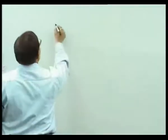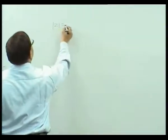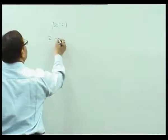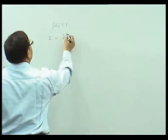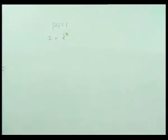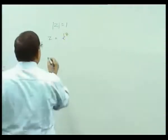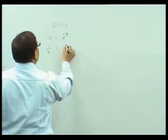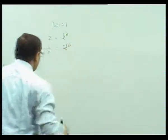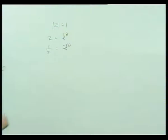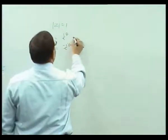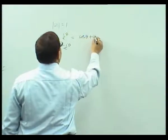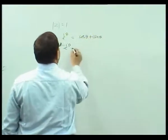If the circle is the unit circle, that is |z| = 1, then z can be written as e^(iθ). Then 1/z = e^(−iθ). Expanding using Euler's formula: z = cos θ + i sin θ, and 1/z = cos θ − i sin θ.